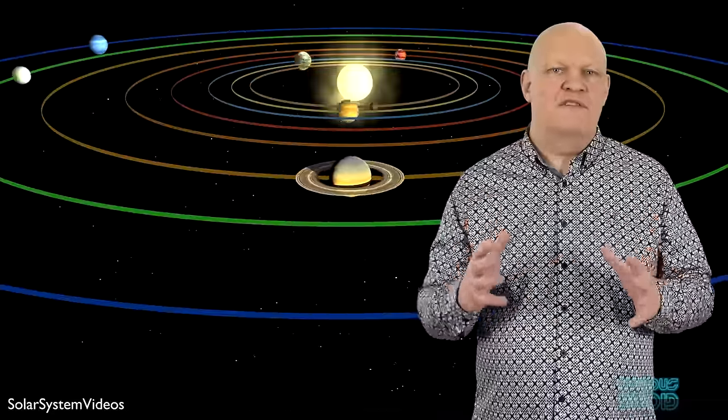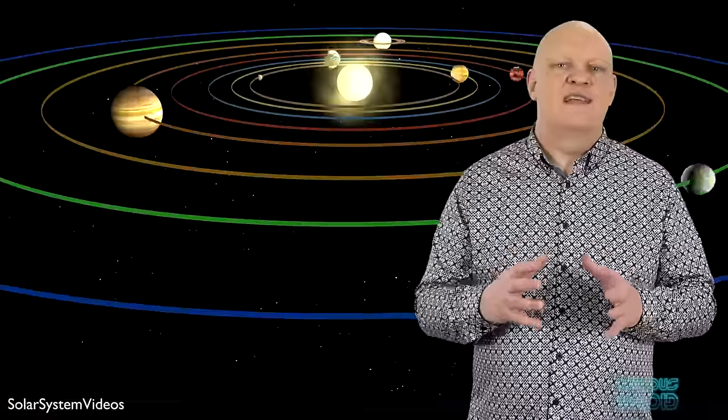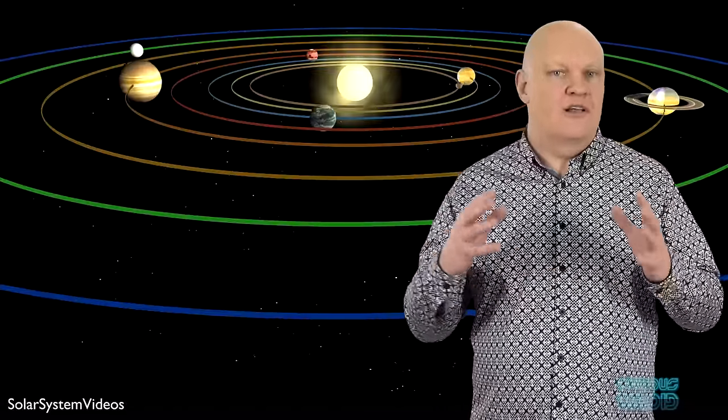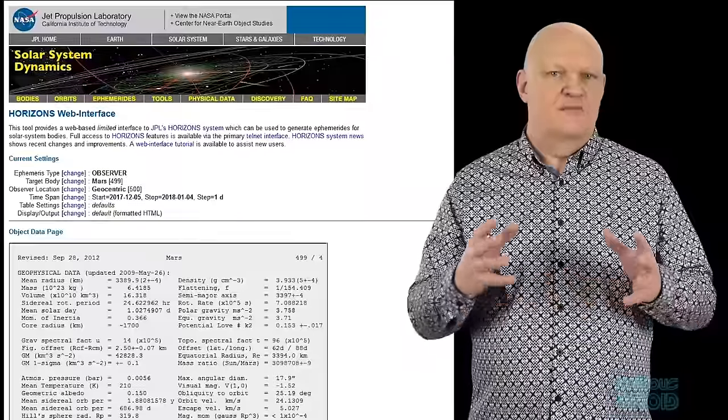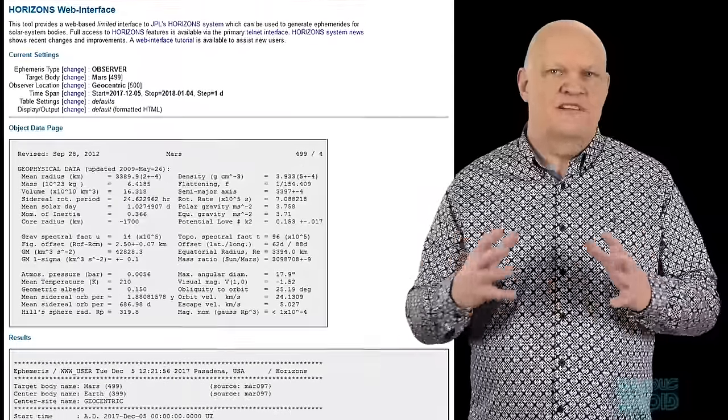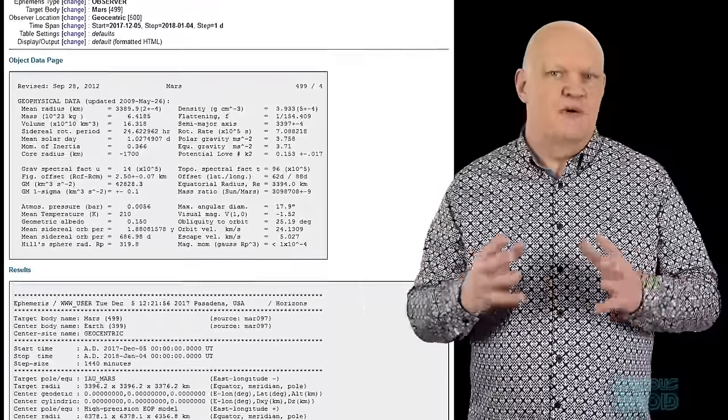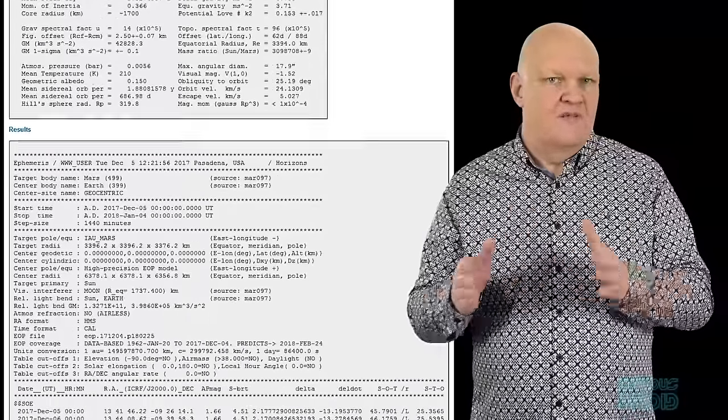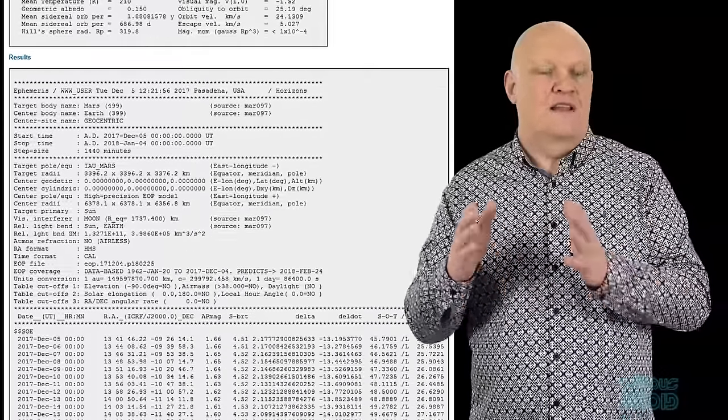Once we know how gravity affects our spacecraft and that we can use it to move from planet to planet, the next thing we need is an accurate model of the solar system. This will show us where the planets will be in relation not only to the Sun but also to each other and other objects like comets and asteroids. This model is created from the planetary ephemeris, which is like a timetable for all the major bodies in the solar system and gives their positions relative to the Sun for any given time, both in the past and the future.